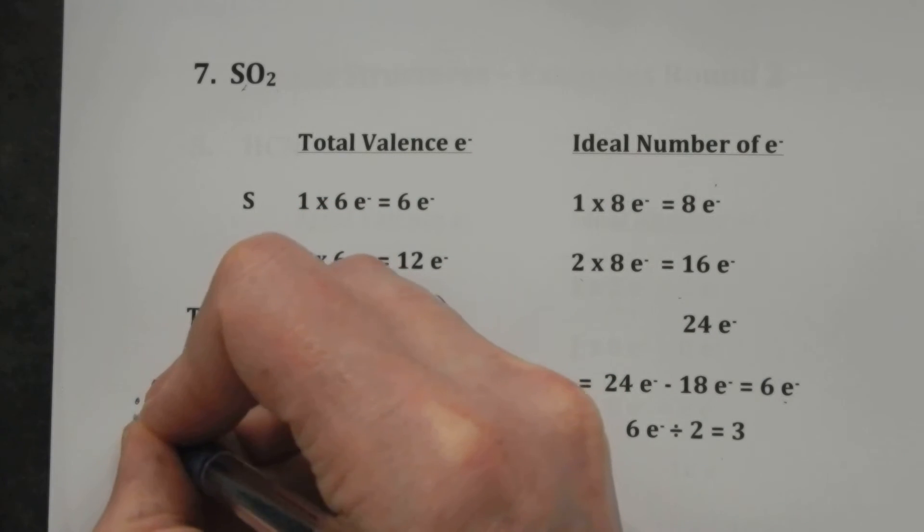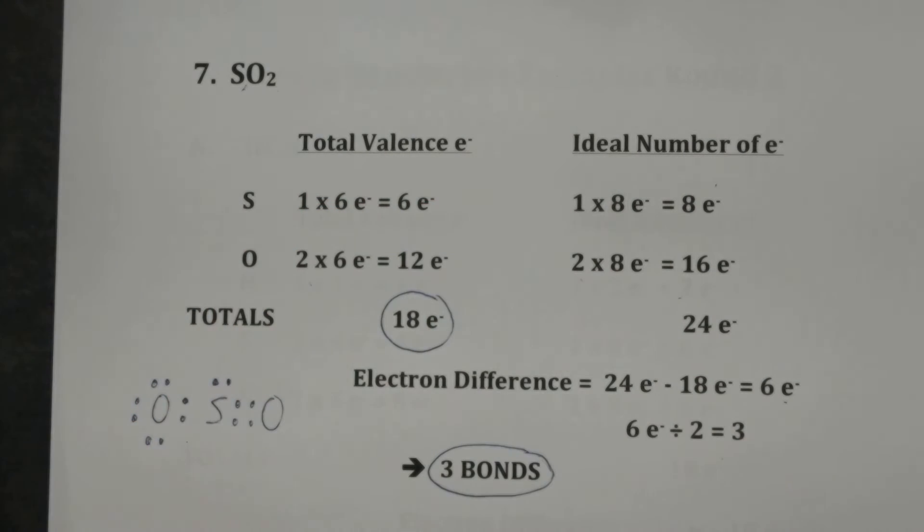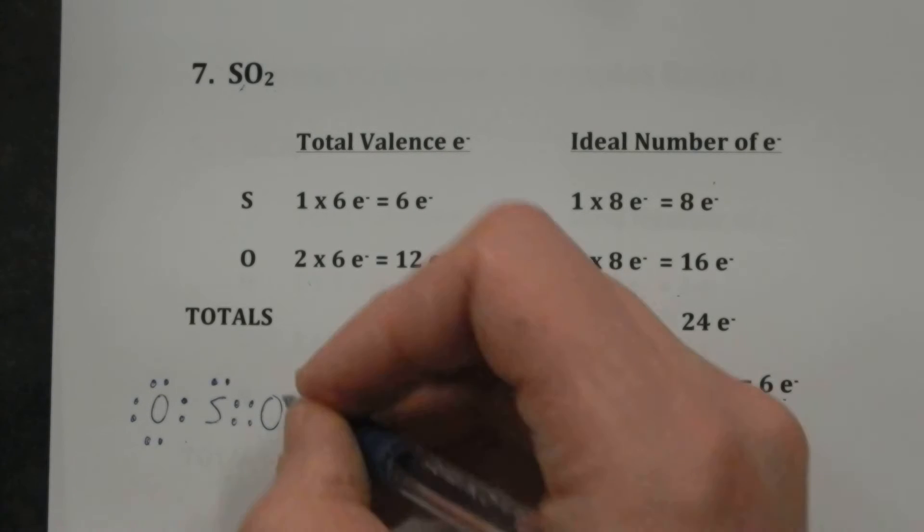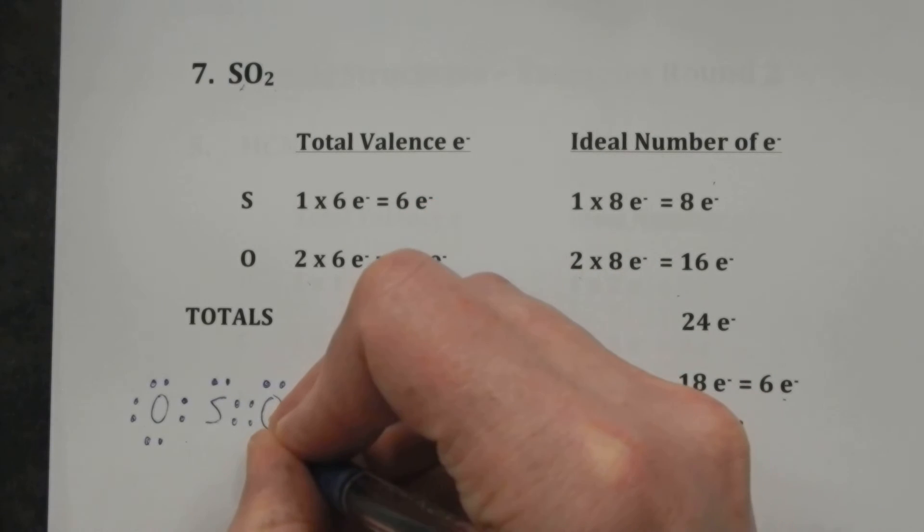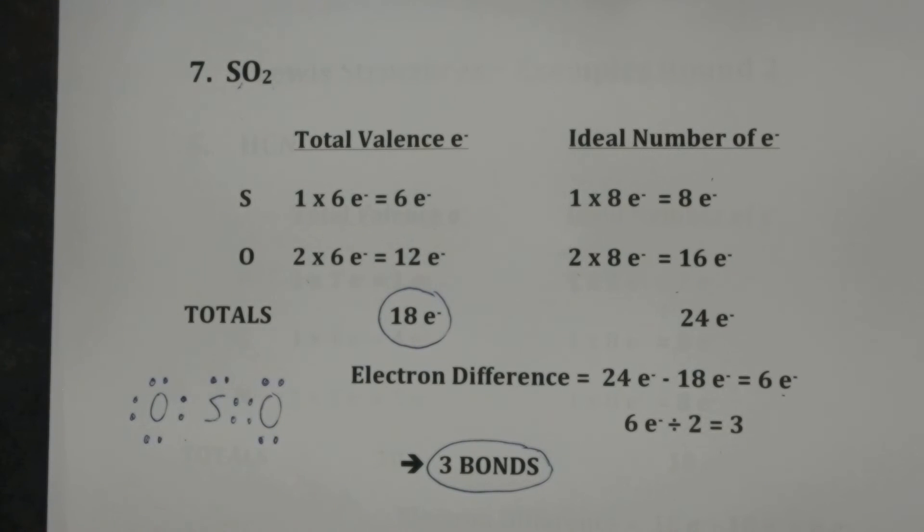This oxygen we have to add six more. It now has eight around it, and this oxygen is four around it already so it needs four more. And that is done.